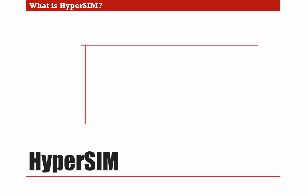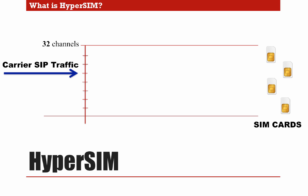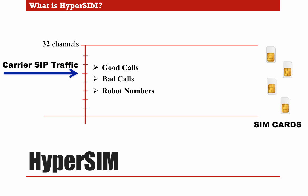For this traffic termination scenario, we have a Hypermedia gateway with 32 GSM channels, which receives incoming SIP traffic. On the other side, we have the SIM cards allocated inside the Hypermedia gateway, which can host a total of 128 or 320 SIM cards depending on the gateway model. In daily incoming VoIP traffic, we can get good calls, but also bad calls or robot numbers, all mixed together.